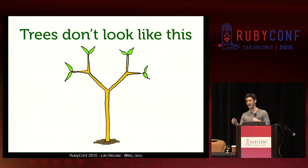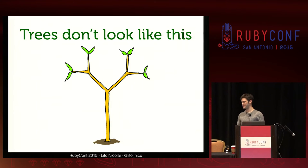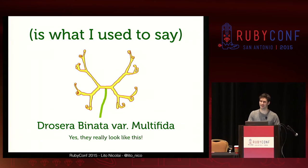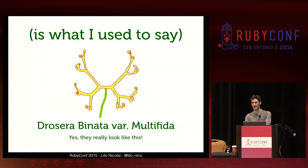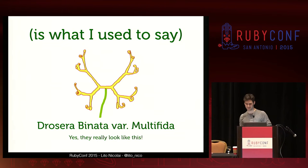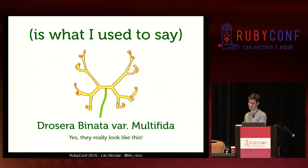Trees don't actually look like this — at least that's what I used to say when I gave this presentation. It turns out there are plants that look like this. Here's Drosera binata. This is an ancient carnivorous plant, still around today. You can find it in the wilds of Washington State. It really looks like that — it has that exact branching structure, each angle 60 degrees. But aside from these carnivorous plants that exist in a tiny region of the world, trees maybe don't look like that in general.